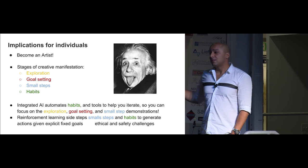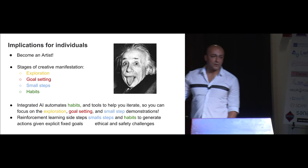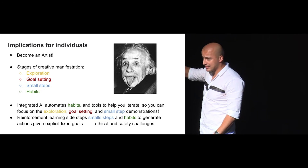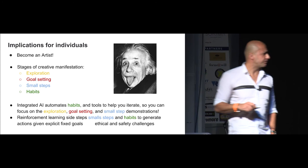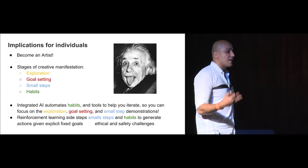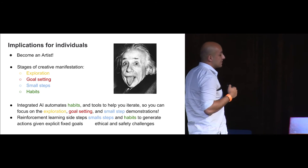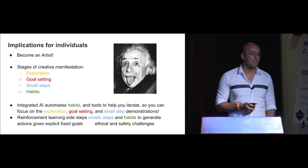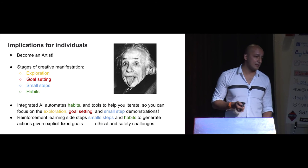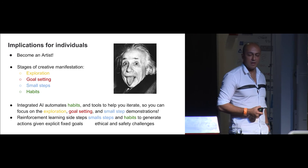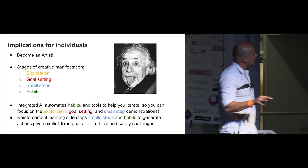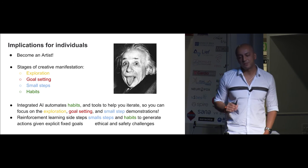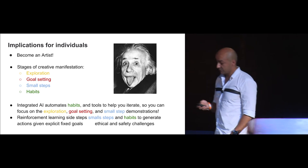Now there is a different related branch in AI, which is called reinforcement learning, which tries to go directly from goals to behavior without going through this natural creative manifestation process. And that has a lot of ethical issues, a lot of safety issues, which we're debating right now. We're going to be debating for the next few years. The White House recently outlined steps that we need to take to make sure this is safe. But that's not integrated AI. Integrated AI is the first step. It's basically automating habits and small steps so you can be an artist.